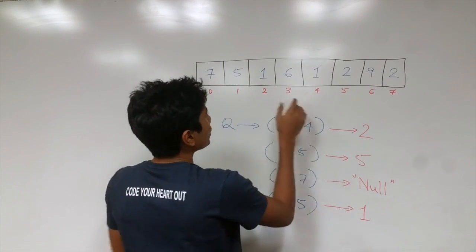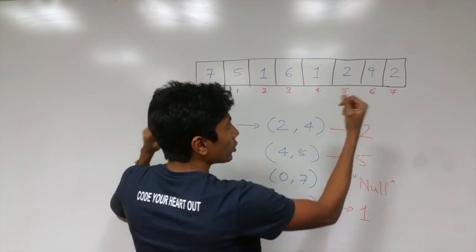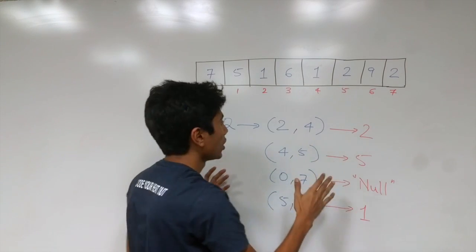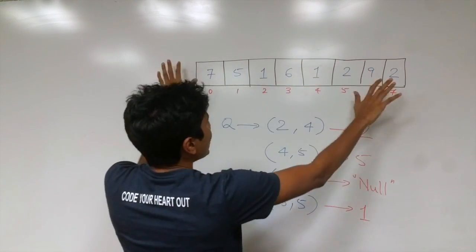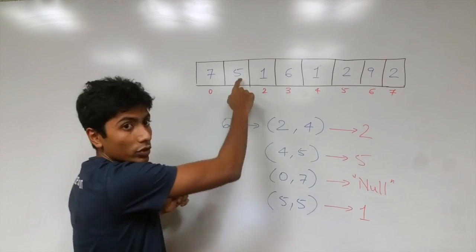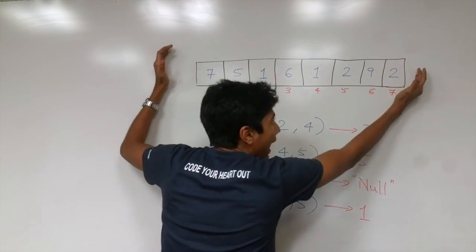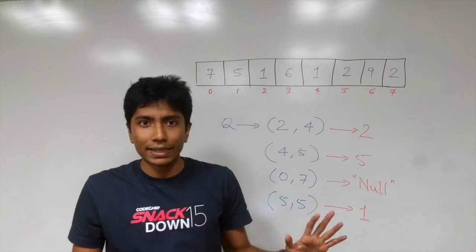So 2 to 4 is a range where 1 and 6 exist in it. Everything outside of it, you need the minimum. 2 is the minimum which does not exist in this range. Similarly, 4 to 5 you have 1 and 2 in it, outside of this the smallest element is 5 which doesn't exist in this range. 0 to 7 has the entire array, this is just an edge case so you can print null or anything like that.